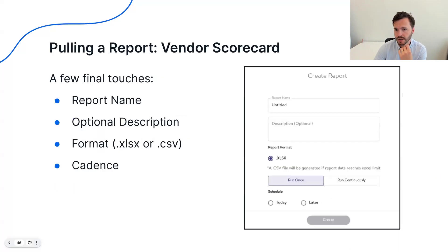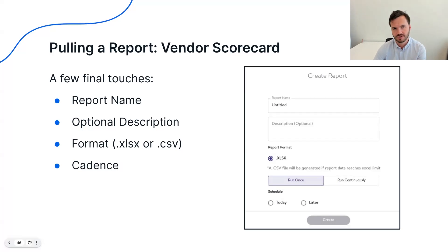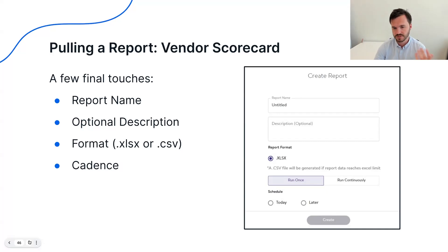Some of the more cosmetic elements: you can name the report and have an optional description. Names are essential. You can also pick your format and the cadence. If this is something you're going to need at a regular interval — which most of you probably will — you can schedule that all in there.